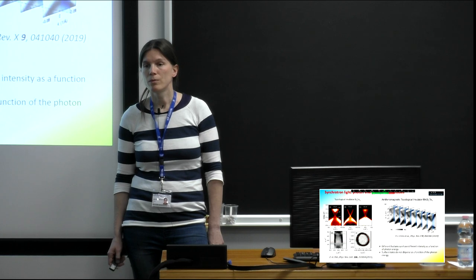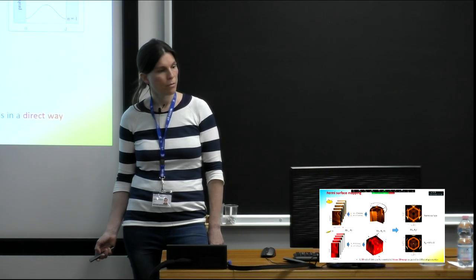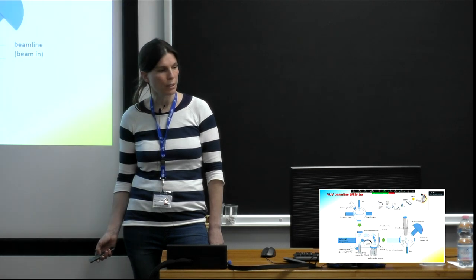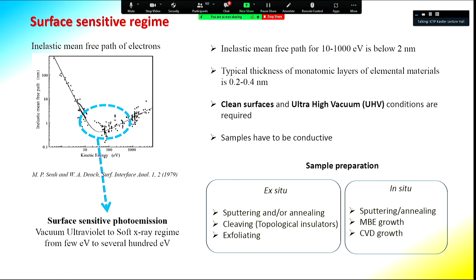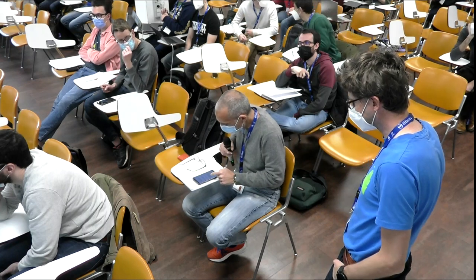There is an interesting question about the minimum in the plot of mean free path as a function of kinetic energy — why there is a minimum around 50 to 100 eV. At lower energies, electrons can penetrate more deeply into the sample. The double trend in that curve is known, though the precise reason is not recalled at the moment. Can we detect electron-phonon coupling by ARPES? Yes, basically we can.